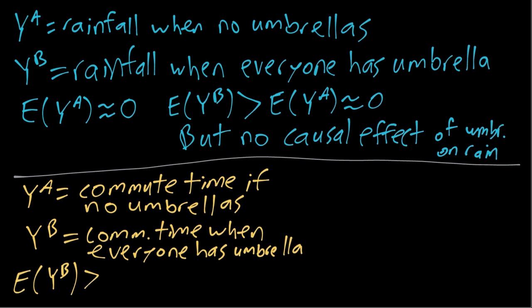So that answers a descriptive question. Again, in terms of prediction, if you wake up and look out the window and everyone has an umbrella, that might lead you to predict you'll have a longer commute time than if you look out the window and no one has an umbrella.